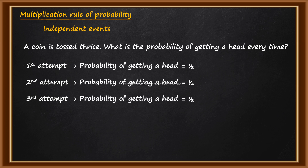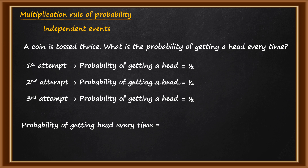In the second attempt, does the probability of getting a head get affected by the first attempt? The answer is no — here also the probability of getting a head is equal to half. The coin is tossed a third time: the probability of getting a head is not affected by the previous two attempts, so the probability in the third attempt is also equal to half.